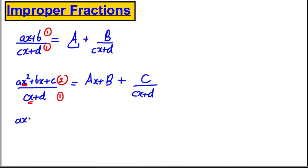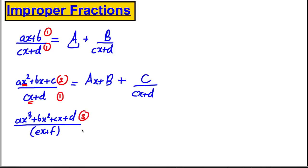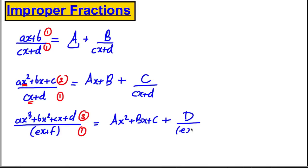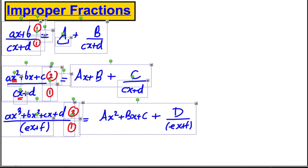Taking it one step further: if I had (ax³ + bx² + cx + d) all over (ex + f), I have a cubic on top and a linear on the bottom. 3 minus 1 is 2, so that would leave me with something that looks like a quadratic — an ax² + bx + c term — plus an algebraic fraction d over (ex + f).